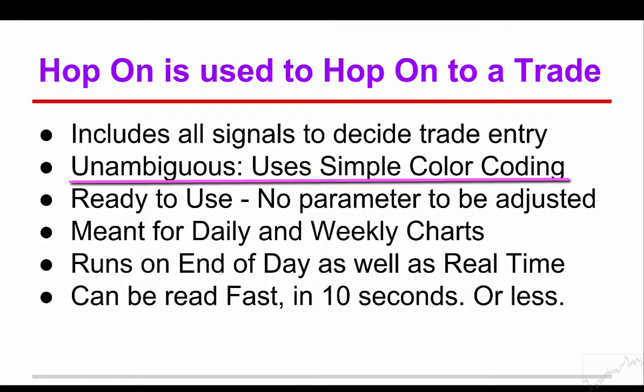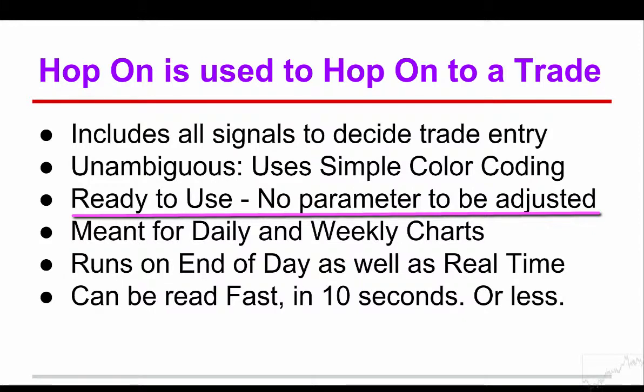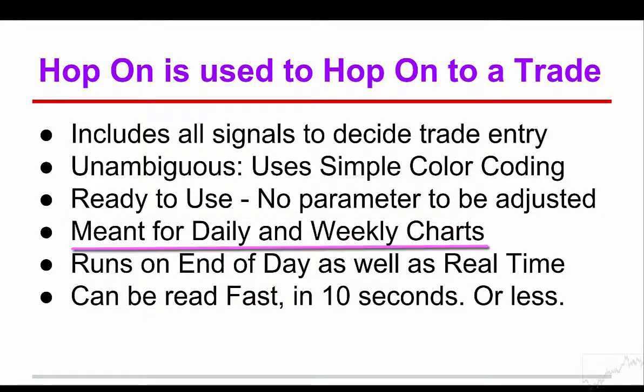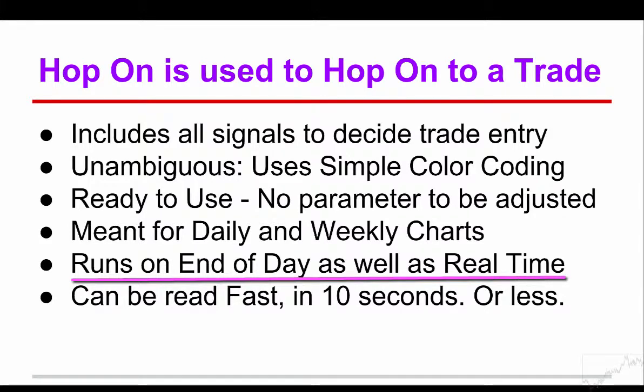There is no confusing convergence divergence, no reading of value or value range of the indicators. The entire template is designed with consistent color coding: green is bullish, red is bearish, yellow is neutral. Hop On is ready to use — there is no need to spend hours to find that elusive perfect setting of the parameters. In fact, there is no parameter to be set. When required, we have created separate templates; for example, Hop On for the India market is different from Hop On for the USA market. The charts look the same — internally, Superior Profit takes care of the differences inherent in those stock markets. Hop On is designed for daily or weekly charts and can be run on end-of-day data as well as on real-time data.